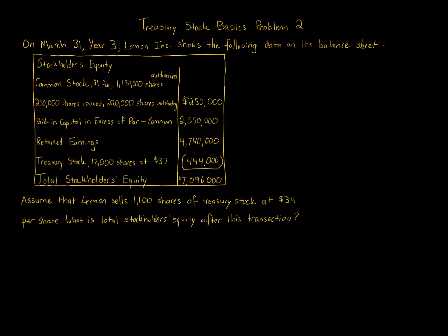Treasury stock basics problem 2. On March 31st year 3, Lemon Inc shows the following data on its balance sheet. Stockholders equity: common stock $1 par, 1,130,000 shares authorized, 250,000 shares issued, 220,000 shares outstanding — $250,000. Paid-in capital in excess of par common: $2,550,000. Retained earnings: $4,740,000. Treasury stock: 12,000 shares at $37 — $444,000. Total stockholders equity: $7,096,000.